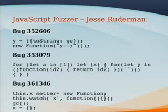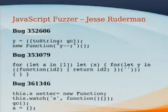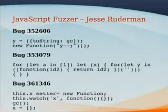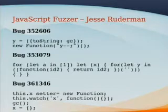The second example is just an example of nested statements that were necessary to cause a crash. And the third example is an example where some state needed to accumulate. It had a setter and a watchpoint for the same variable name, and then triggered garbage collection, and that made a simple statement crash.